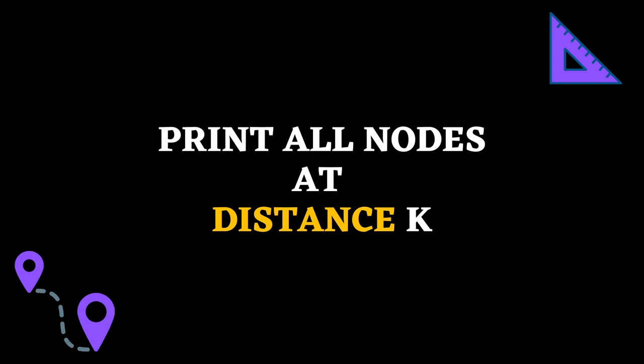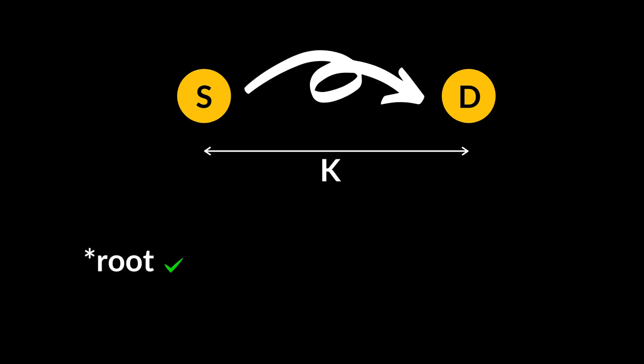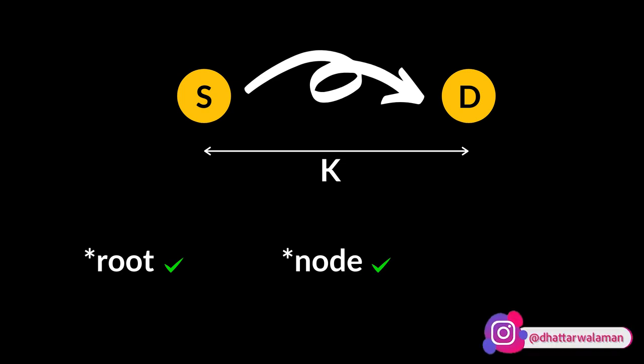Hi everyone and welcome to Upna College. Today we will talk about the problem called Print All Nodes at Distance K. We will be given a binary tree, a target node pointer, and a value K which represents the distance at which we need to print all nodes.